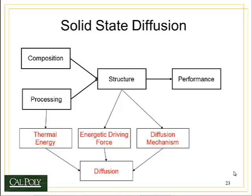For example, if I have boron and I want to move boron into silicon, I have to have a mechanism — a way in which that boron can actually move through the silicon crystal. In addition to that, I have to have something called the energetic driving force. This is a defect or a mistake, something wrong with the crystal that can be changed in order to reduce the energy of the overall system.